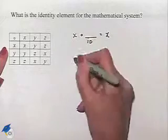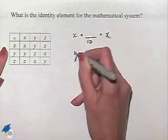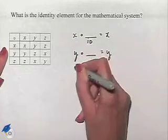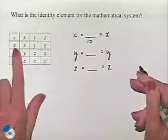So we're going to need to look for X combined with the identity to be X, Y combined with the identity to be Y, and Z combined with the identity to be Z. Well, let's start with X.